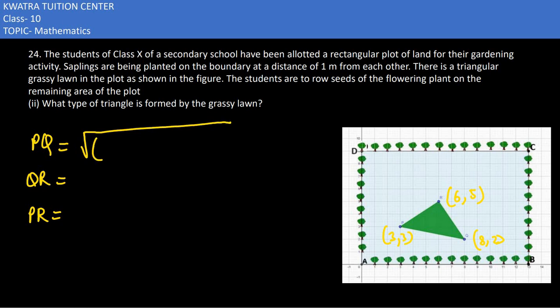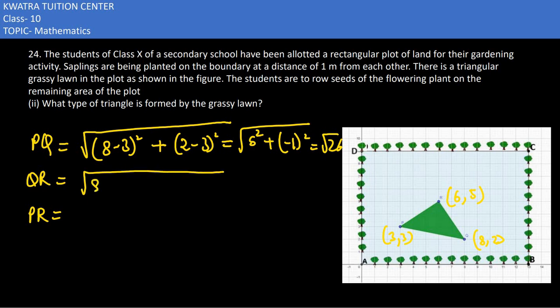For PQ we use coordinates 8,2 and 3,3. It's 8-3 square plus 2-3 square. 8-3 is 5 square, 2-3 is minus 1, square root. 5 square is 25, 25 plus 1 is root 26. QR will be 8-6 square, then 2-5 square.